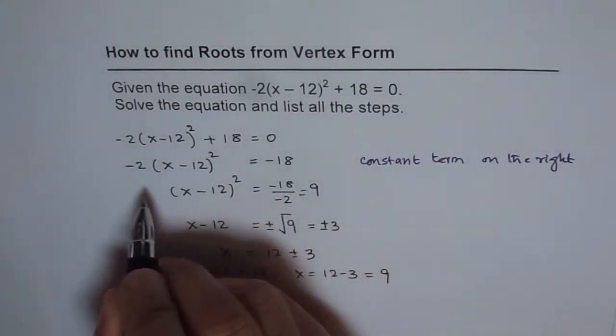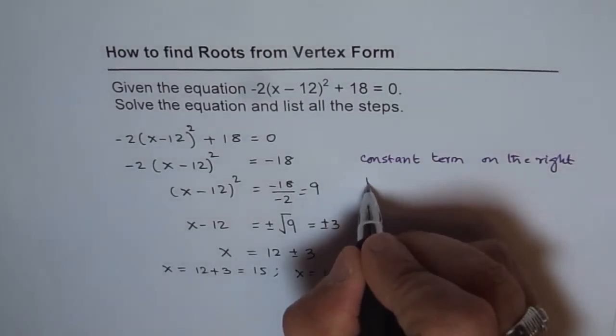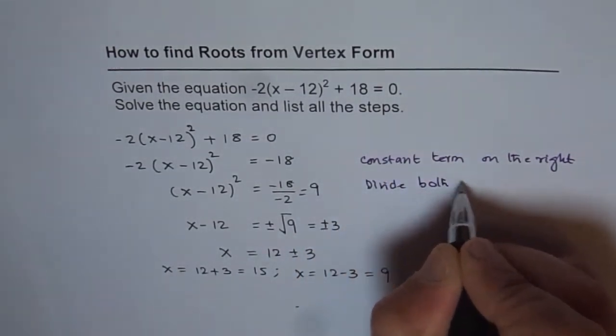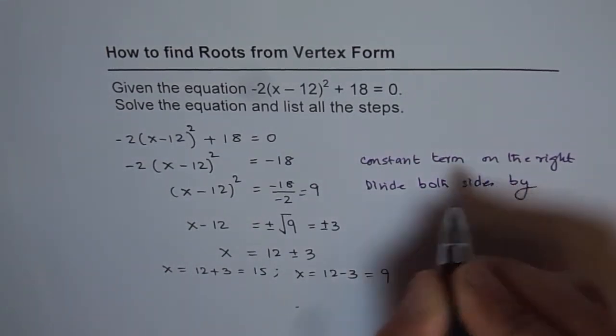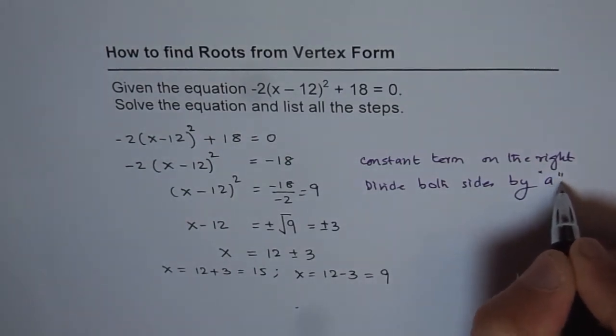Second, divide by the leading coefficient, which is a. The second step is to divide both sides by a. In a normal equation, it will be the factor a, which is the leading coefficient.